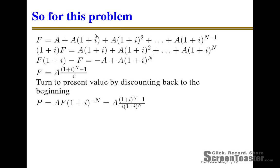This next term is the deposit made in the time period before the last time period — in our problem, this $10 (that's what the capital A is), deposited in time period 4, which gets to grow by a little bit over a single time period. Then time period 3, all the way back to the deposit in time period 1, which gets to grow by N minus 1 time periods up to time period N. This is a brute force calculation for finding the future value of a constant series of deposits.